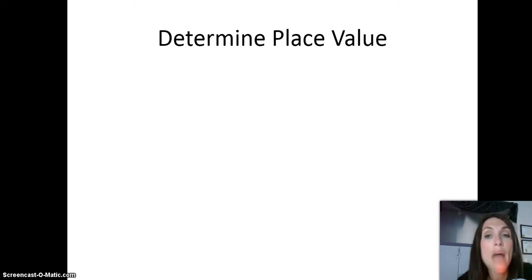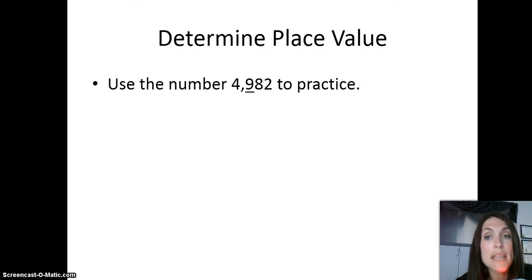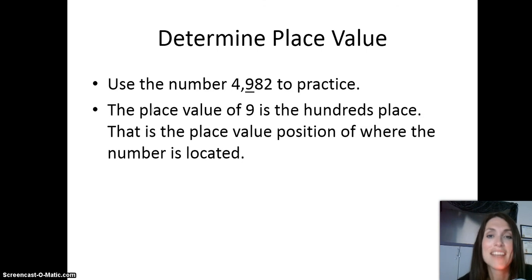So let's talk about how we determine place value. Let's use the number 4,982 to practice. You'll see that the 9 is underlined. What would be the place value of the 9? We need to determine what its place value is. We can do that by knowing that the 2 is in the ones place, the 8 is in the tens place, so the 9 would be in the hundreds place. The place value of 9 is the hundreds place — that is the place value position of where the number is located.